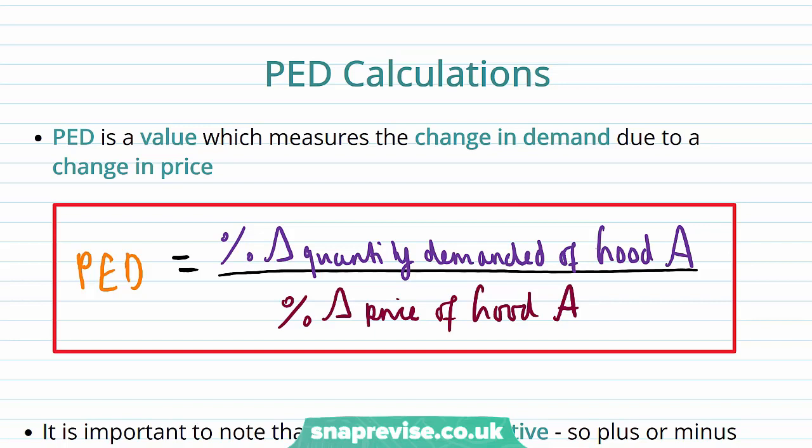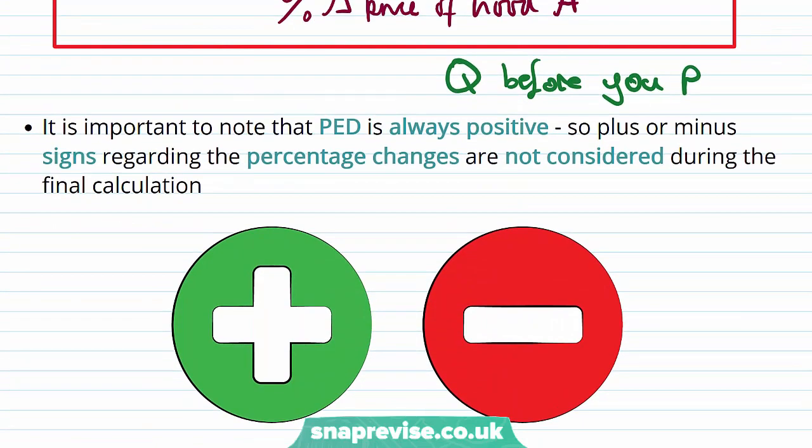As I said, PED is going to involve doing some calculations. If PED is a value which is measured, and that measure shows the change of demand due to a change in price, we can put this into an equation. The equation for PED is going to be percentage change, and this symbol here stands for the Greek letter delta, and all that means is change. Percentage change of quantity demanded of good A divided by the percentage change price of good A. In an exam, you might end up forgetting which way up it goes, quantity above price. But the best way to remember it, in my opinion, that I learned in school, was you Q before U P. So basically, Q goes above P always, hence Q before U P. It is important to note that PED is always positive, so plus or minus signs regarding the percentage changes are not considered during the final calculation.